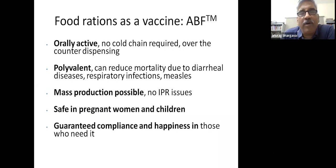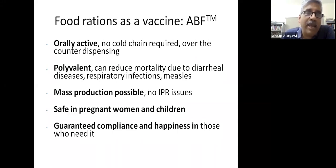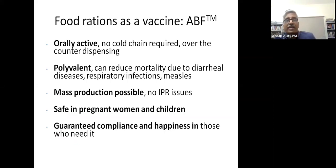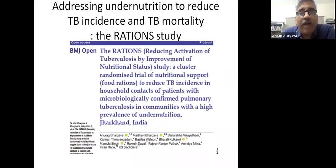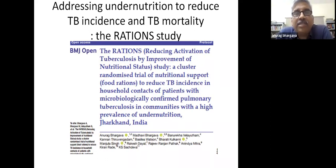Taking these findings forward: food rations in undernourished populations can act as a vaccine for TB—an oral, polyvalent intervention without IPR issues, safe in women and children, and with guaranteed compliance. This is the hypothesis being tested in the RATION study.